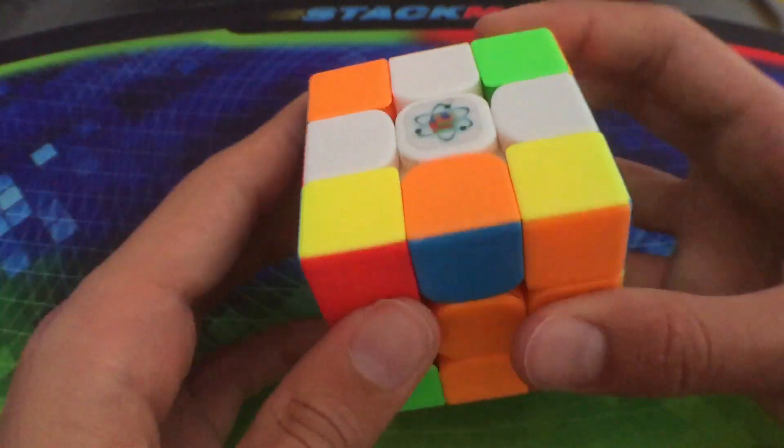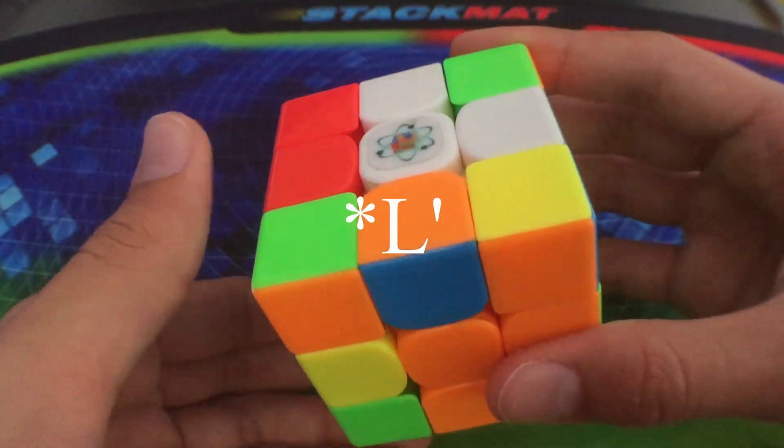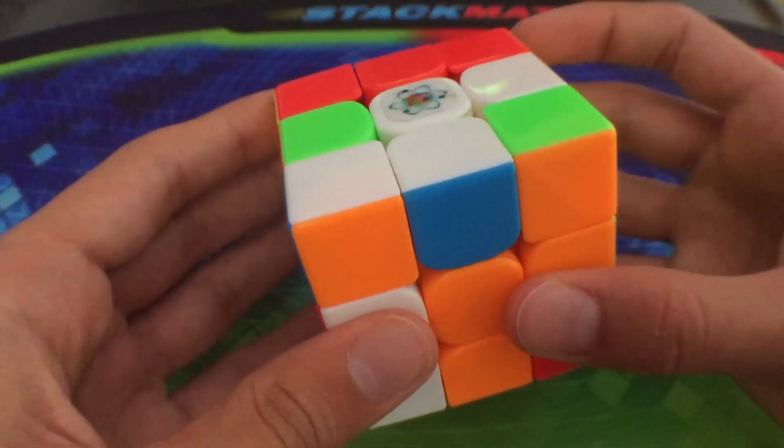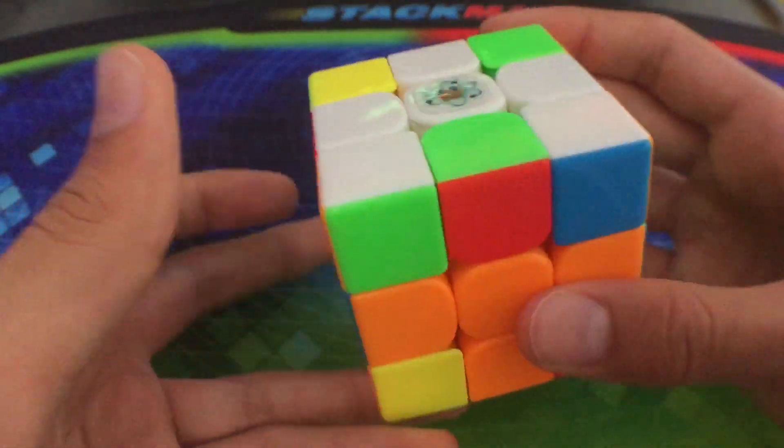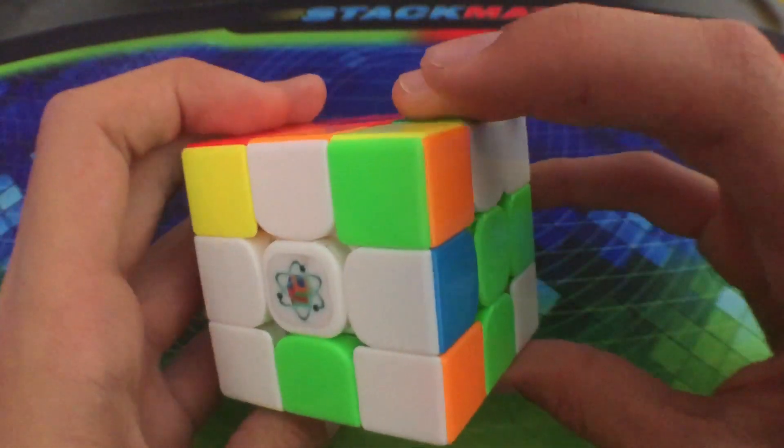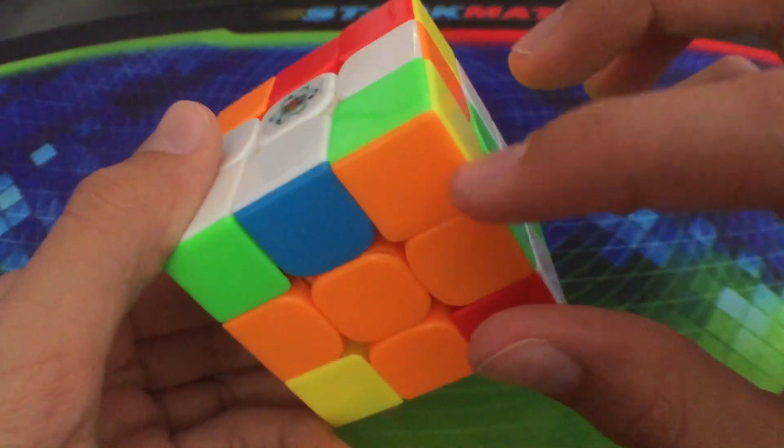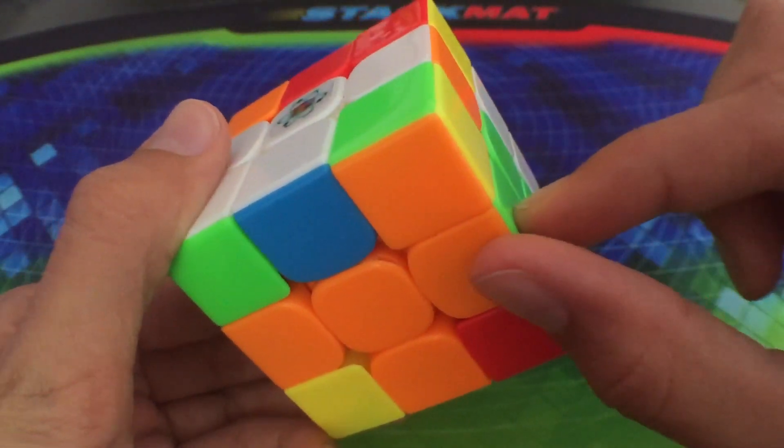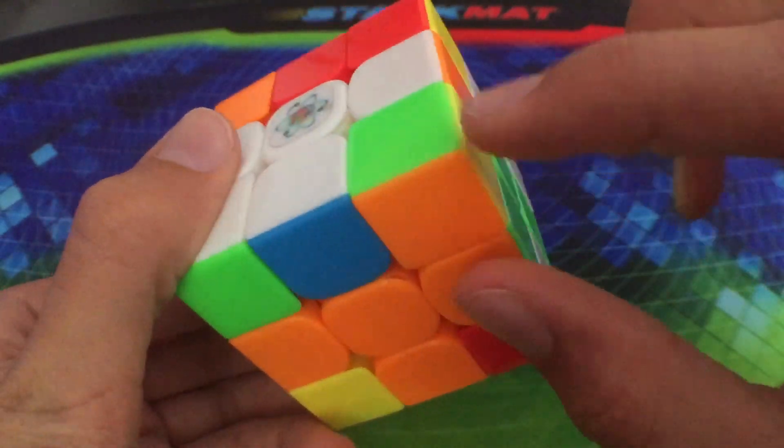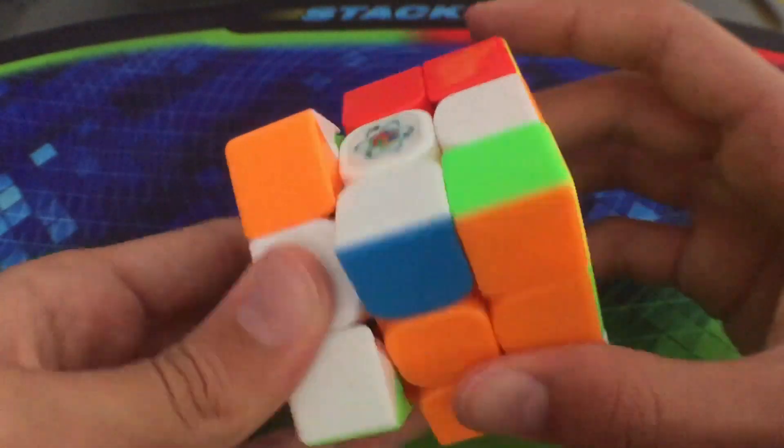So I did this pair first to insert at the back: L U prime L2 U prime L prime. And then I immediately saw while I was solving this pair, just as I was about to insert, I saw this piece and this edge was already solved, so this piece was just going to move to the back there.